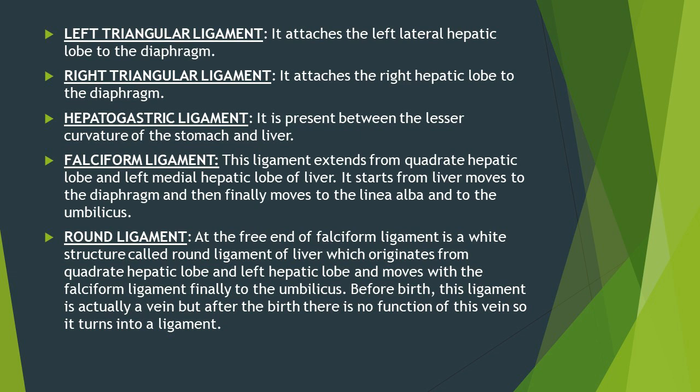The falciform ligament is also present between the quadrate hepatic lobe and left medial hepatic lobe, extending from the liver up to the diaphragm and then along the linea alba up to the umbilicus. At the free end of the falciform ligament there is a structure called the round ligament, which moves along with the falciform ligament up to the umbilicus.